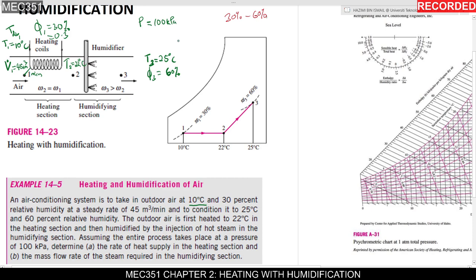If you use the formula for calculations it is more accurate, but you can also use the psychrometric chart, which is based on 101.325 kPa. Since 100 kPa differs by only about 1 kPa, it is negligible. In this video I will show how to use the psychrometric charts, and you can compare results with the formula equations.